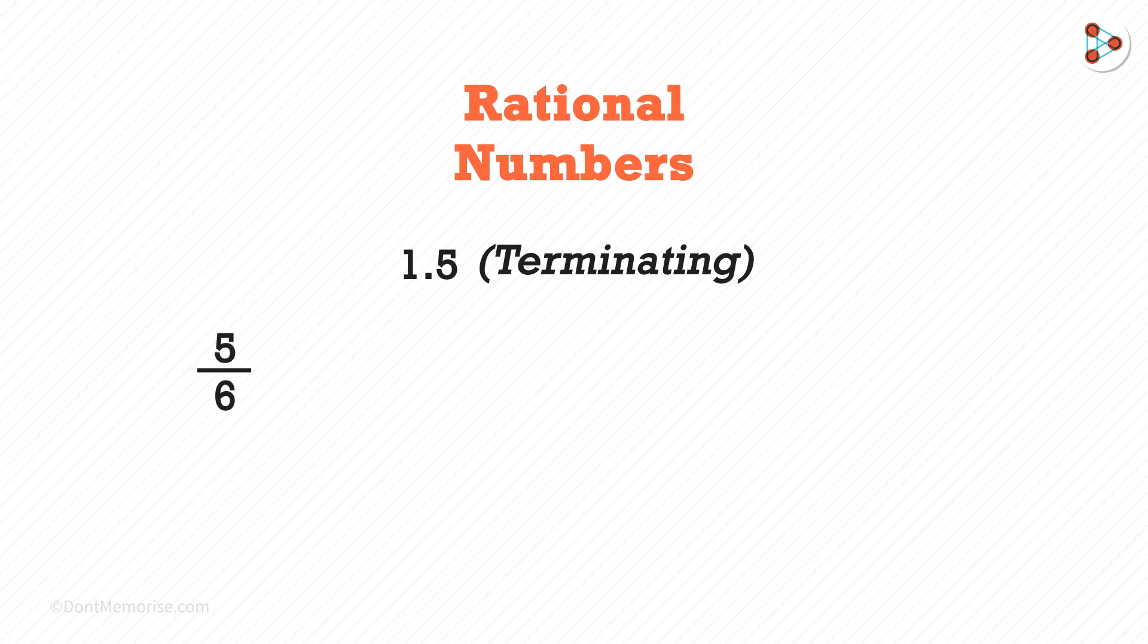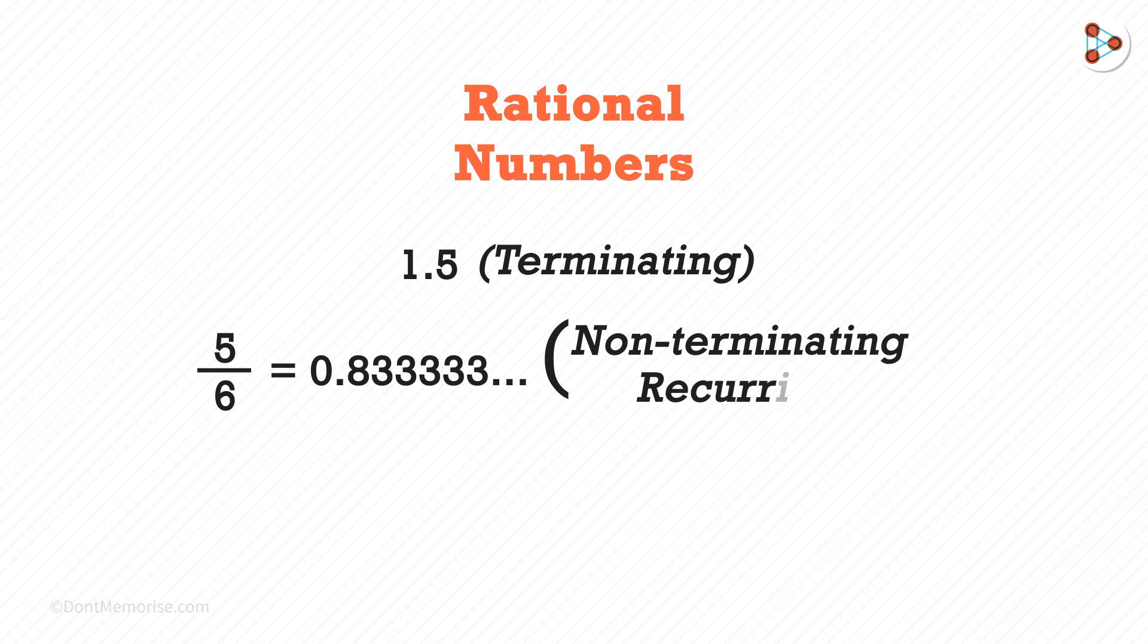If we try writing 5 over 6 in the decimal format, we get this. If we see that it is not terminating, that means it is non-terminating and recurring.